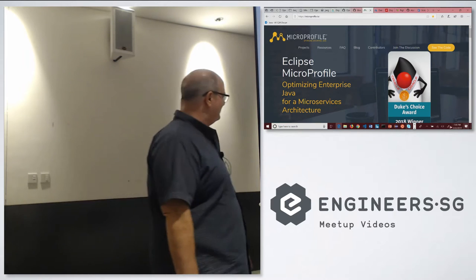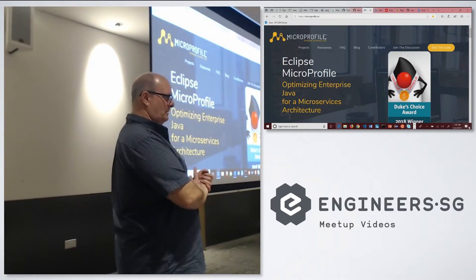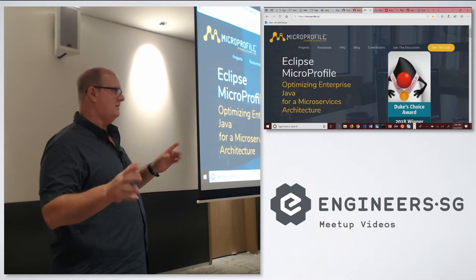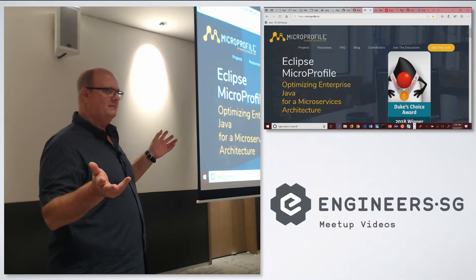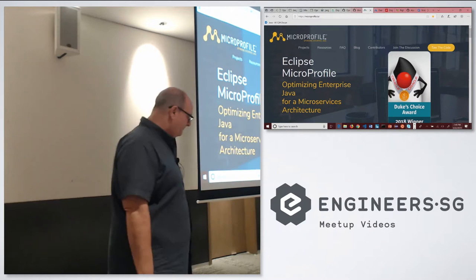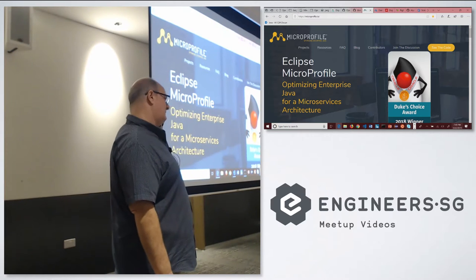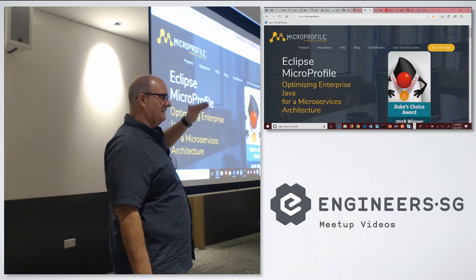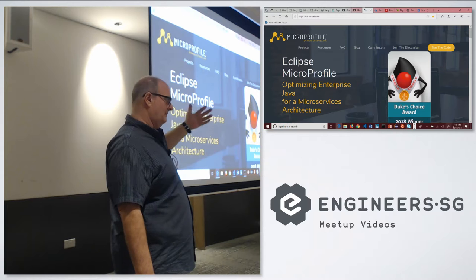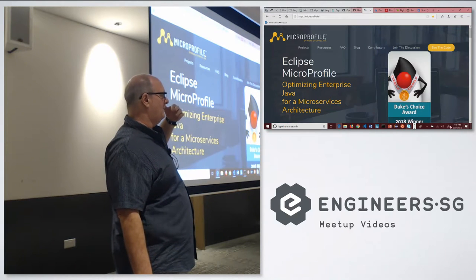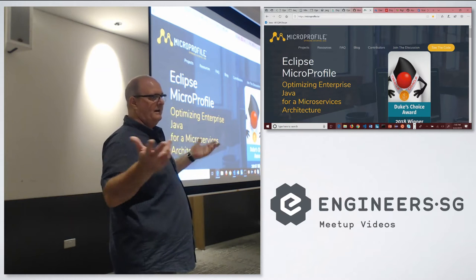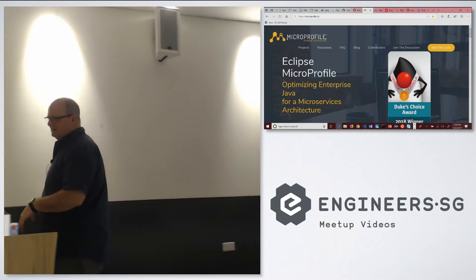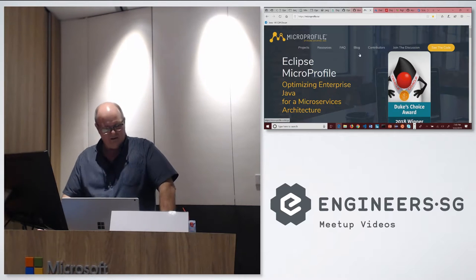Tonight we're going to talk about MicroProfile and OpenTracing. I'll give an intro into what MicroProfile does, show it running on my local machine, then show you how you can run it on containers on Azure in the cloud. Then I'll talk about how you can run it on Kubernetes, and finish up with a demo on Red Hat OpenShift. Everything I'm going to show tonight is open source and available publicly.